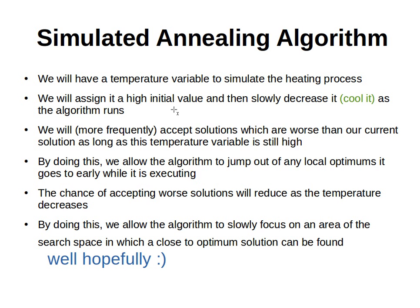We will have a temperature variable to simulate the heating process. We give it a very high value and then slowly decrease it, or cool it, as our algorithm runs. We start the temperature variable at a very high value and as the algorithm iterates we will slowly decrease it, simulating the cooling process after heating up the metal.